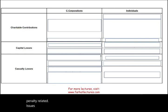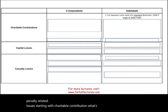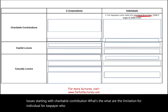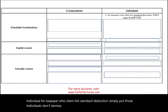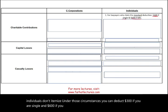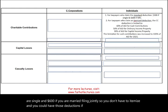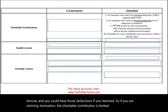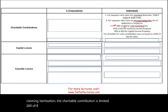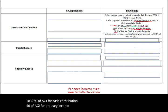Starting with charitable contribution, what are the limitations for an individual taxpayer who claims the standard deduction? Those individuals don't itemize. Under those circumstances, you can deduct $300 if you are single and $600 if you are married filing jointly. If you itemize, the charitable contribution is limited to 60% of AGI for cash contributions, 50% of AGI for ordinary income property, and 30% of AGI for capital income property.